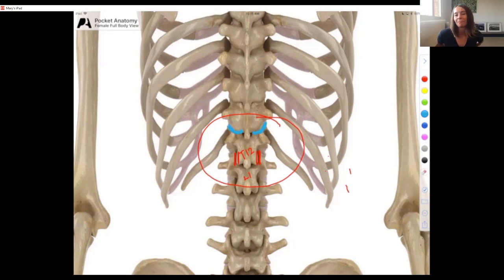So it is at this region, at T12, where we still have extension capability, lumbar-esque extension, but then we also have the increased capacity for rotation. It's got a hybrid nature.